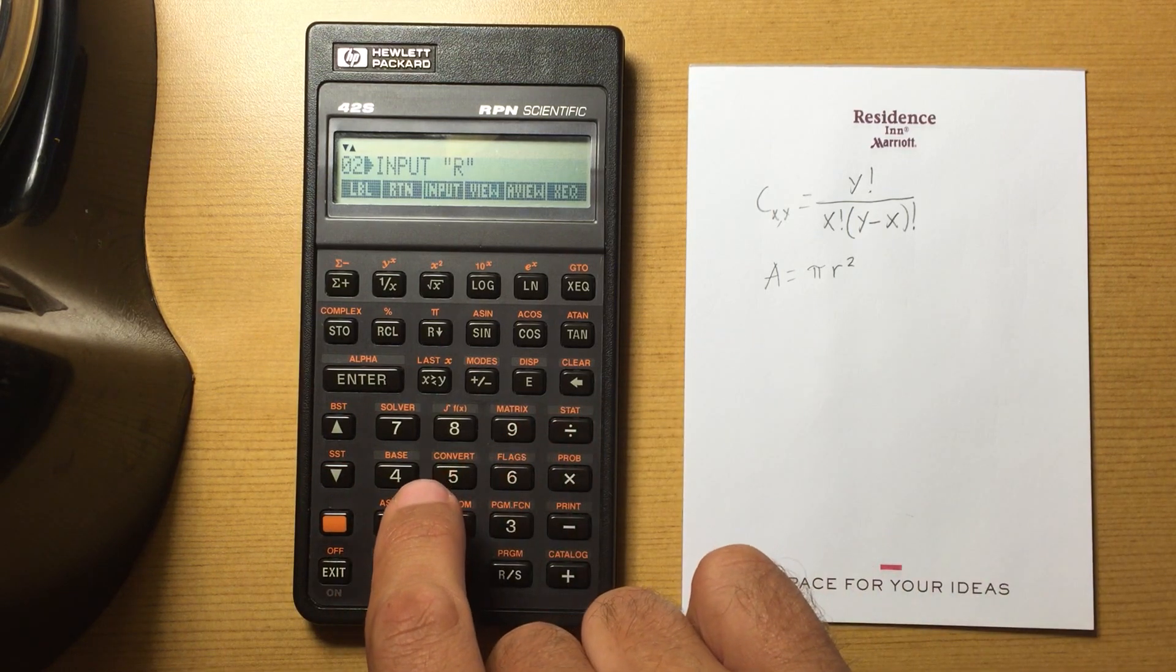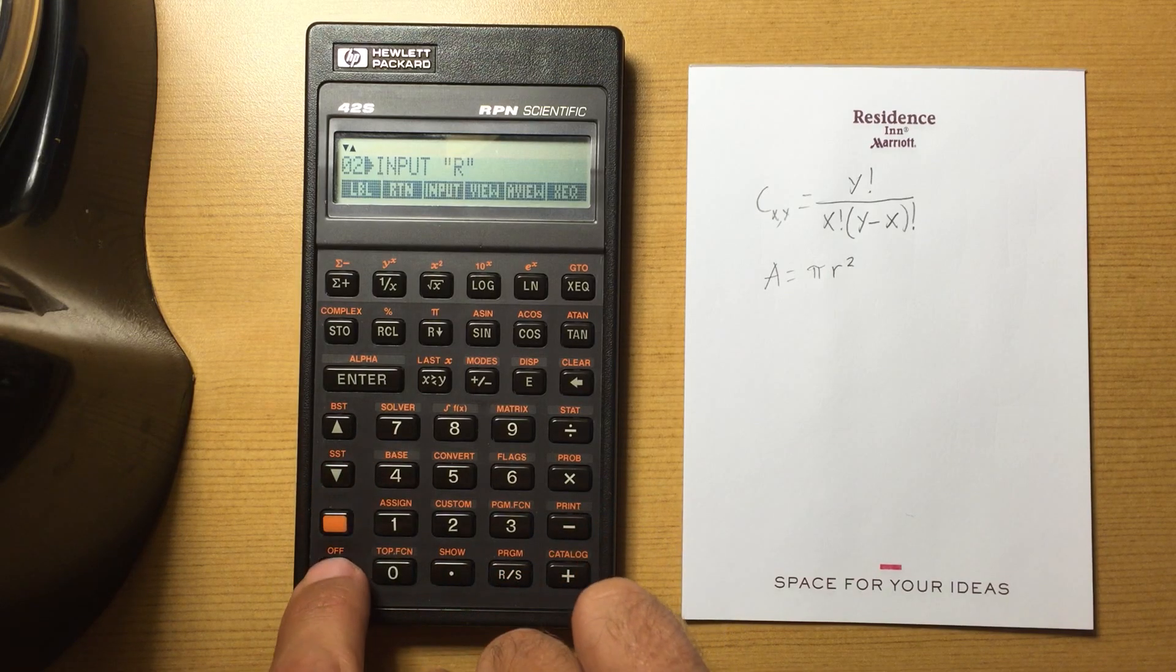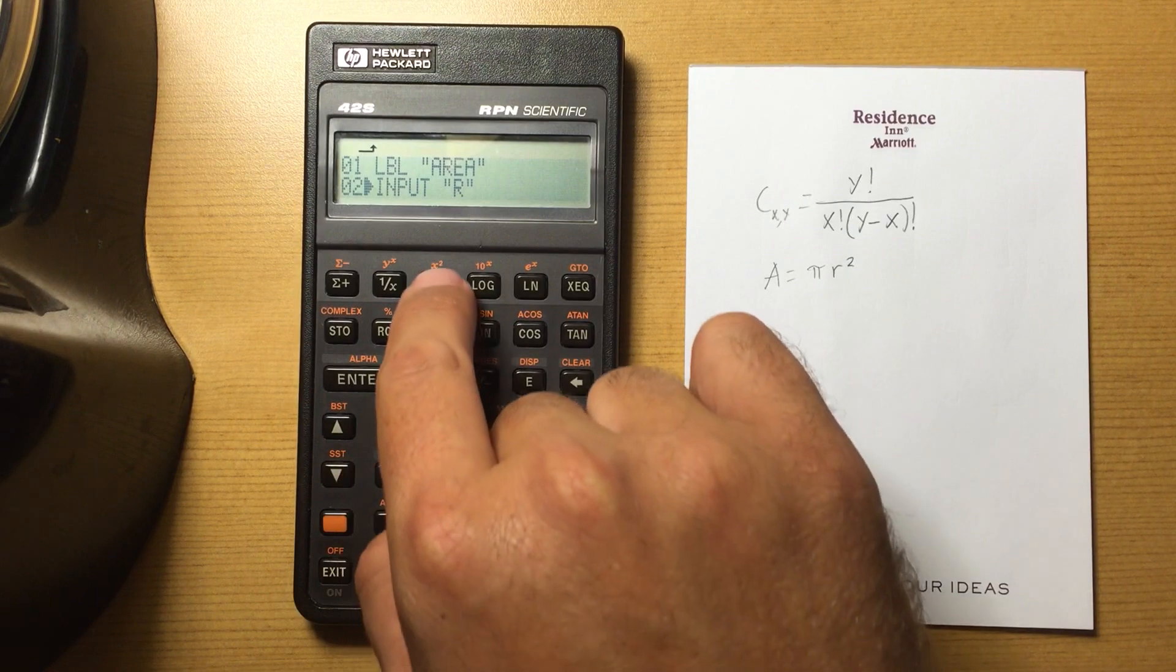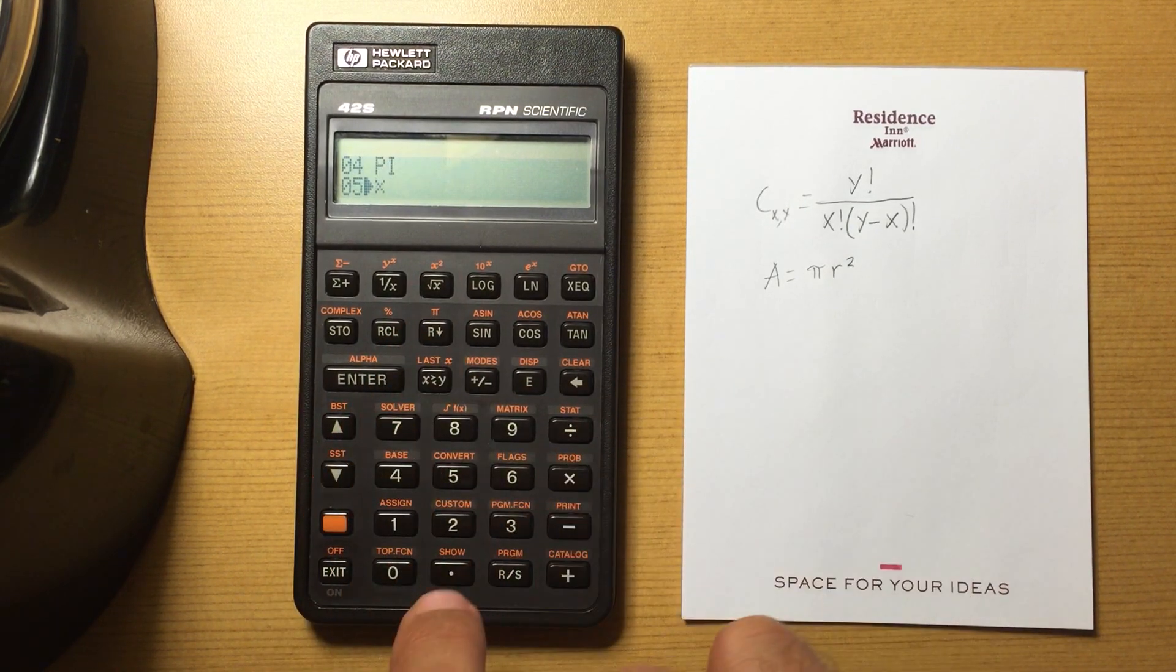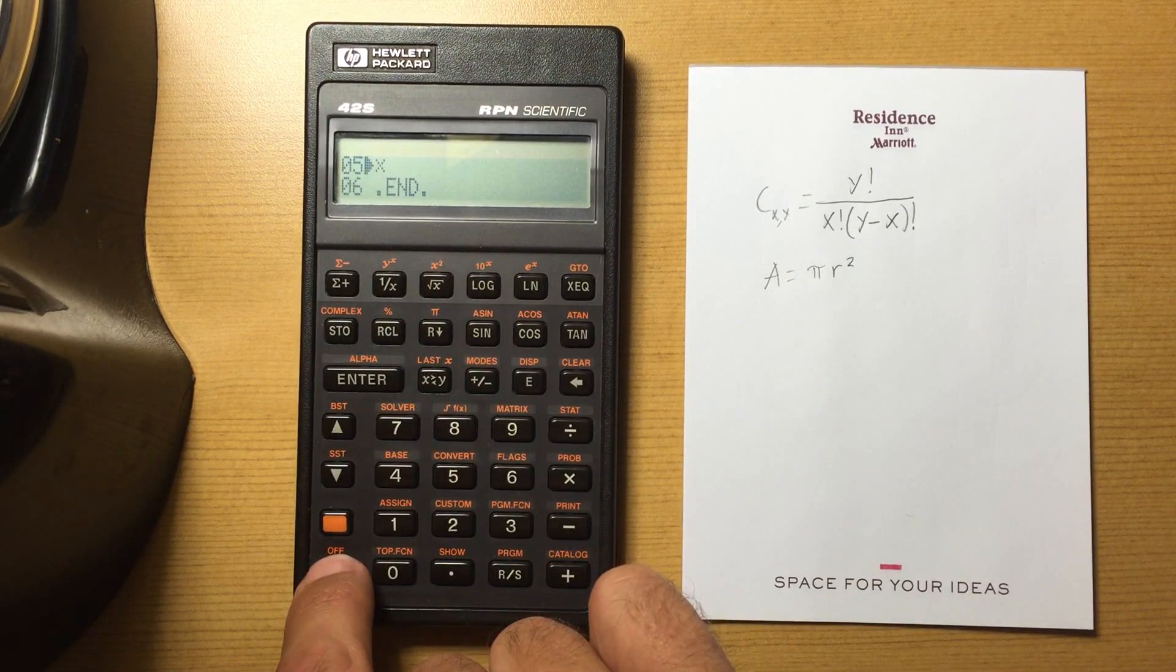Okay, and I am going to square that. So let me back out of this menu, square it, put in pi, and multiply those together. Okay, and that should be the end of the program.